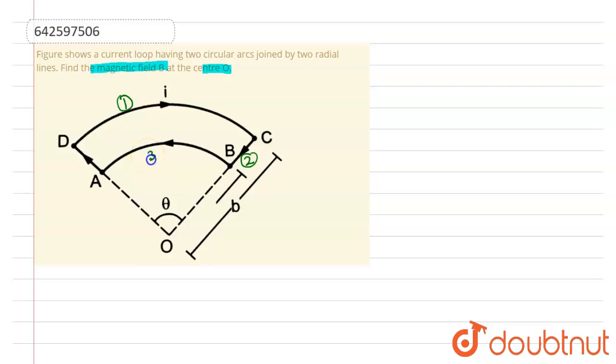Due to DC, the magnetic field at O will be B₁, which is μ₀Iθ/(4πb), and the direction will be perpendicular inward direction.